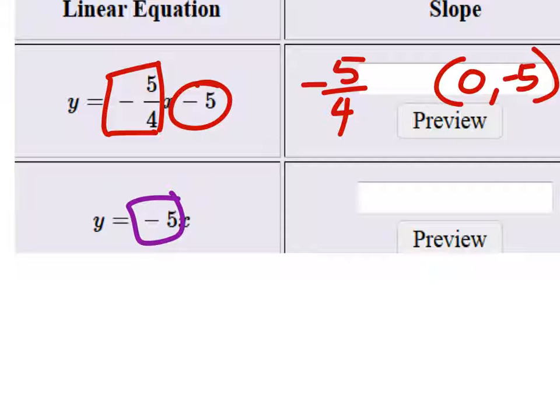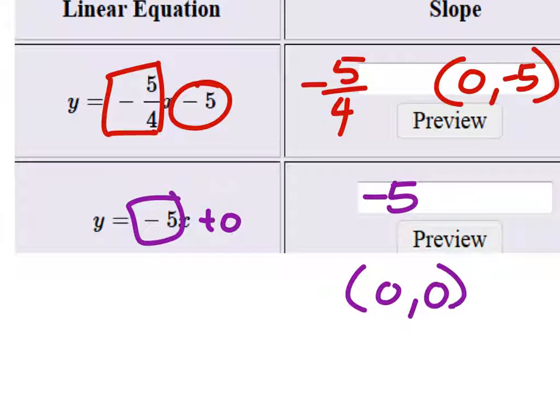The second one, the slope is the coefficient of x, so negative 5. The y-intercept is 0. We could write plus 0 if it helps us to see that, so it's (0, 0).